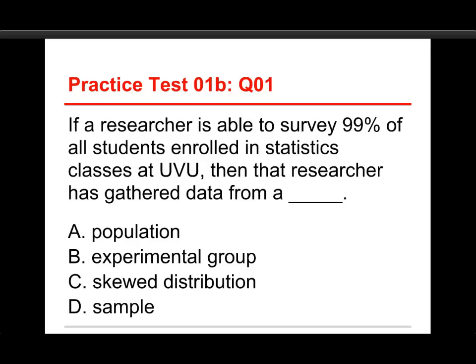The first question on this test is: if a researcher is able to survey 99% of all students enrolled in statistics classes at UVU, then that researcher has gathered data from a blank — a population, an experimental group, a skewed distribution, or a sample. We saw this same question in the pre-test.